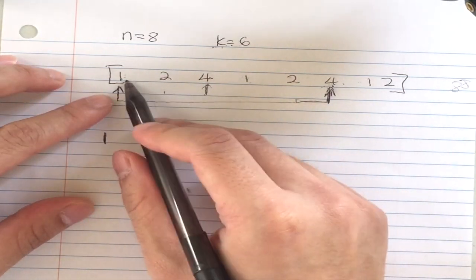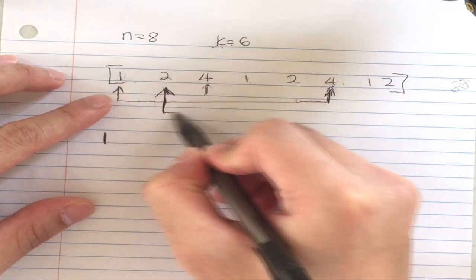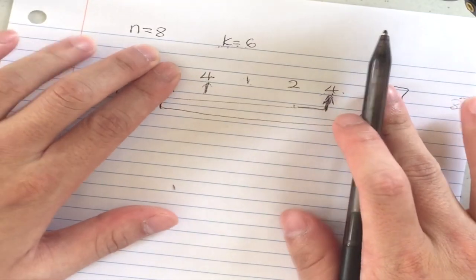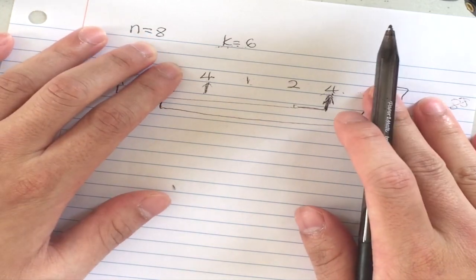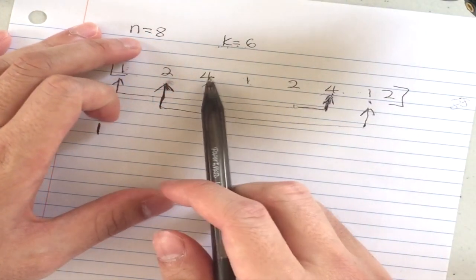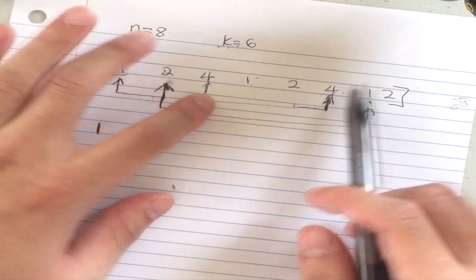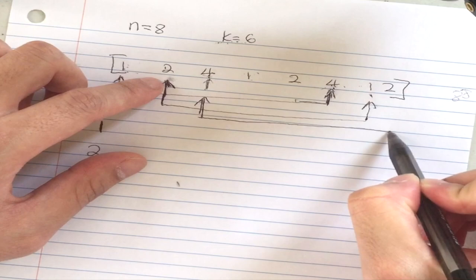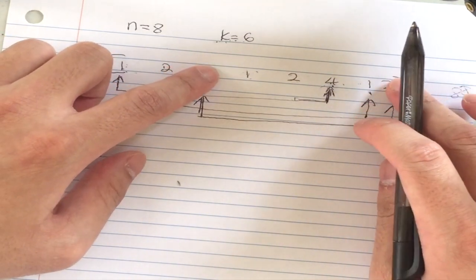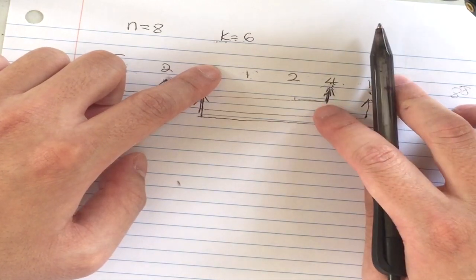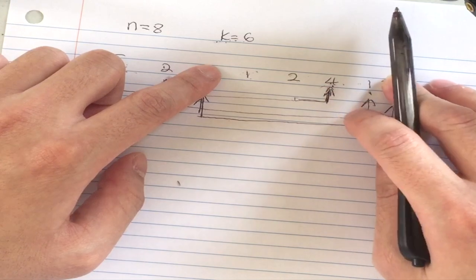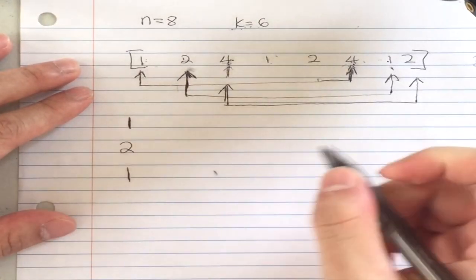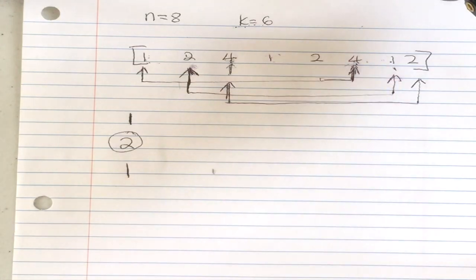The first contiguous subarray had one peak. Starting from the next position and sliding right, in this case there are two peaks: one four where two and one are both less than four, and another four where two and one are also both less than four. The next subarray has one peak. So our maximum number of peaks is two, given size k equals six.